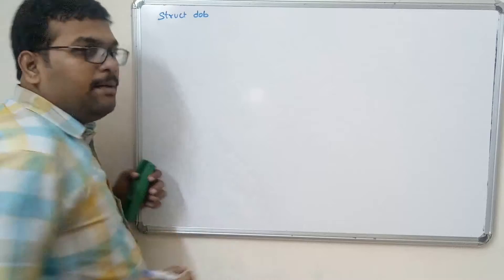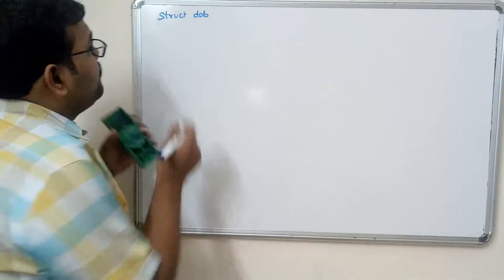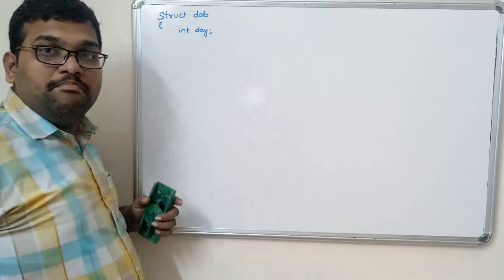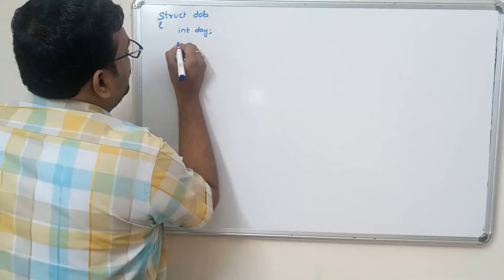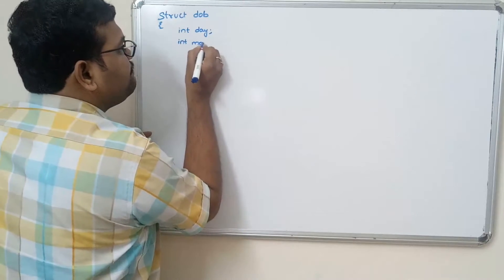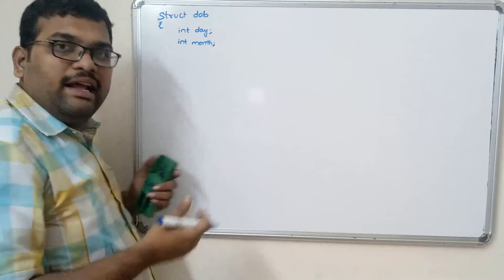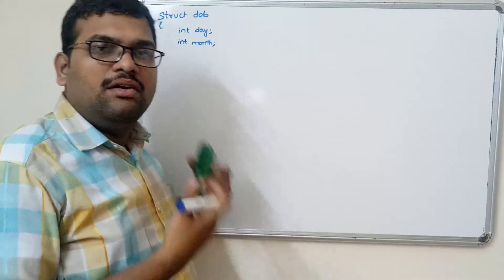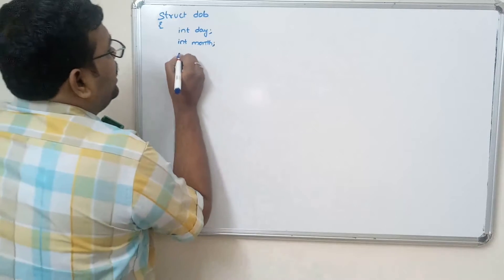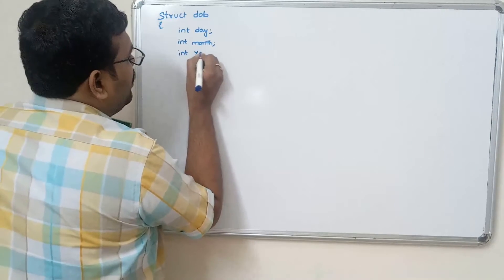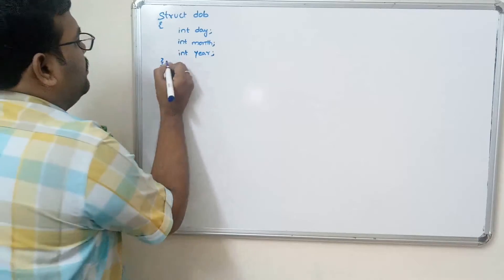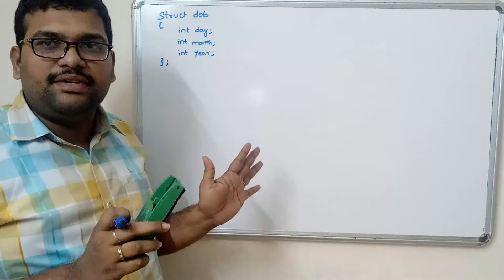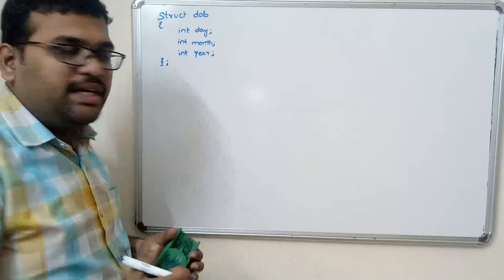We write `struct dob` with the tag name `dob`. Inside dob we declare: `int day`, then `char month[20]` (if you want to store it as a character array), and `int year`. Then close the structure. Here we have only defined the structure, not the structure variable.